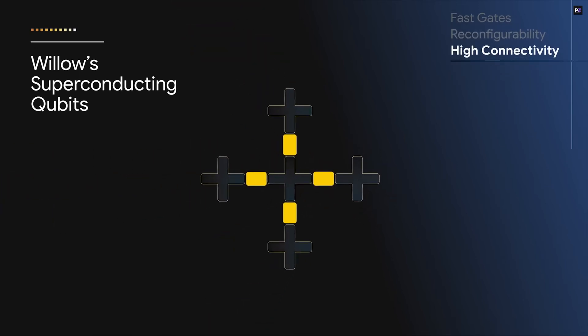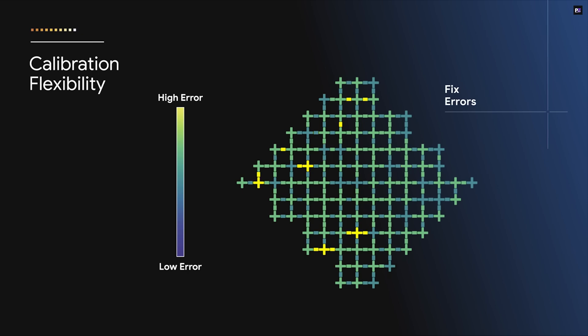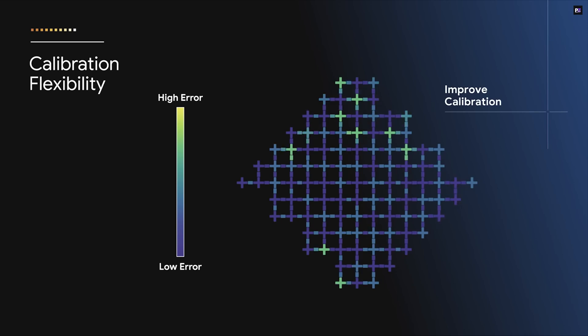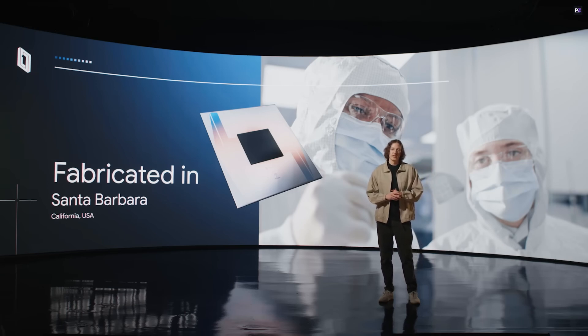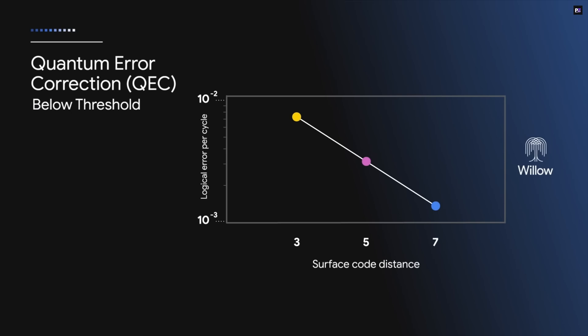This breakthrough is underpinned by a few critical advancements. For one, the Willow chip boasts a 100 microsecond coherence time, which is five times longer than previous generations. This extended coherence is crucial for maintaining the quantum state necessary for calculations. Furthermore, its scalable architecture paves the way for future fault-tolerant quantum computing systems, meaning we can build even larger and more reliable quantum computers down the line.